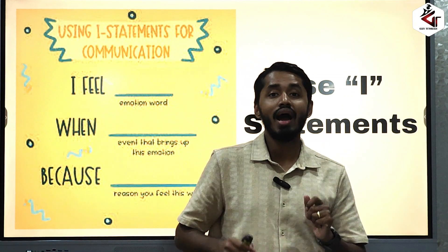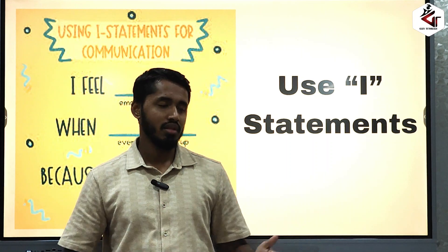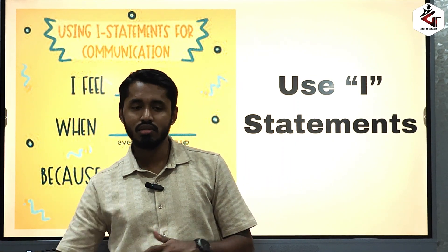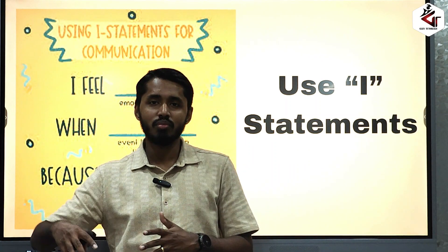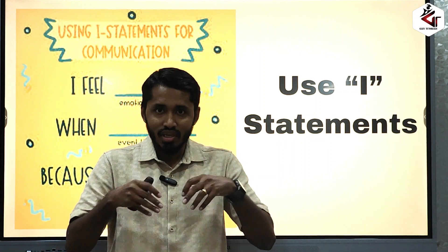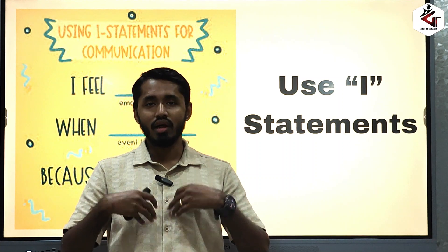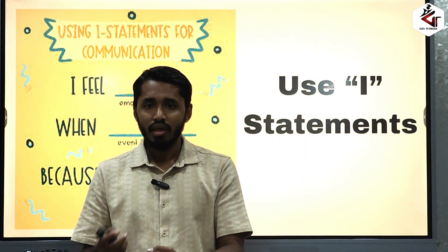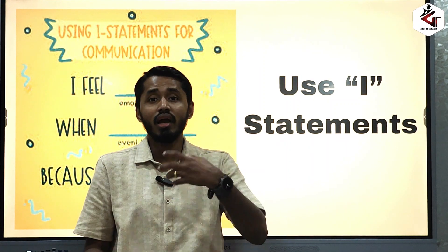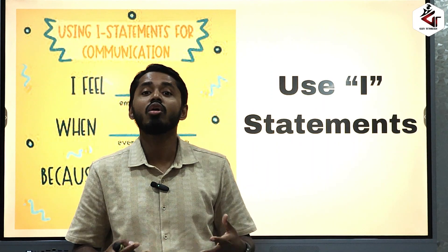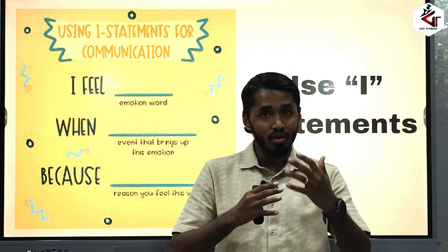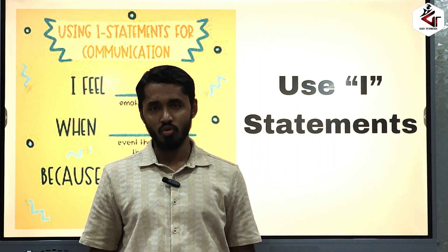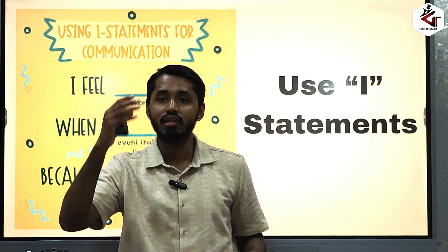The next one: use 'I' statements. Sometimes it happens — suppose your parents are becoming a little biased, covering up for your brother or sister and not taking your side. Instead of saying 'you always do that with me' or 'you never do that with me,' use 'I' statements. Say 'Mummy' or 'Daddy, I want this to happen' or 'I also need this. It would be kind if you would give me this also.' This type of dialogue works and helps a lot in having a good connection with your parents.